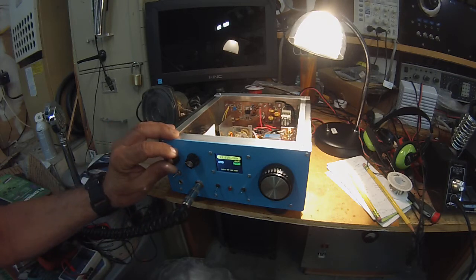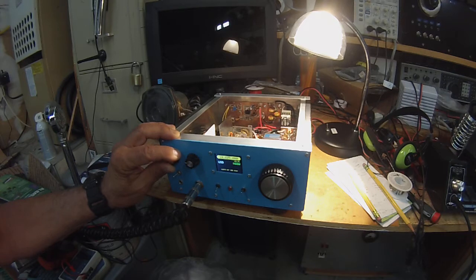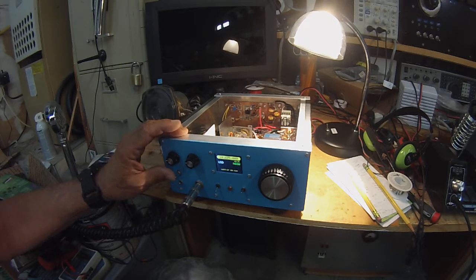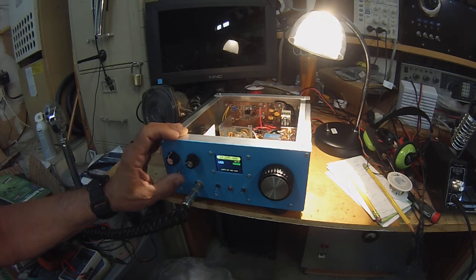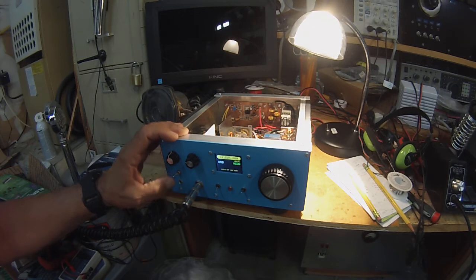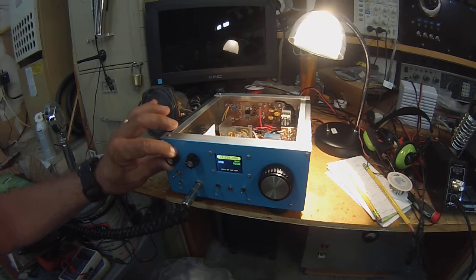N6QW here, this is the LM373 transceiver. We're going to take a little look at it today. First thing is I installed an RF attenuator switch that will provide about 10 dB of attenuation.